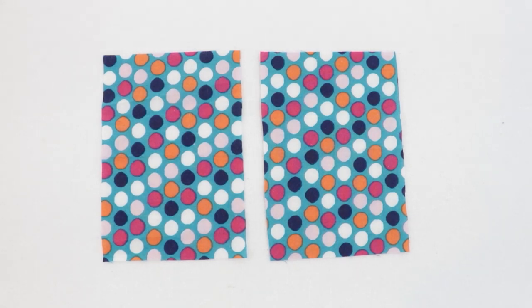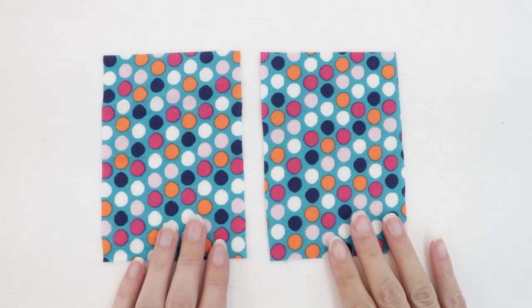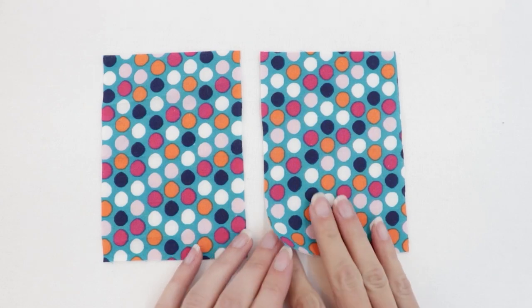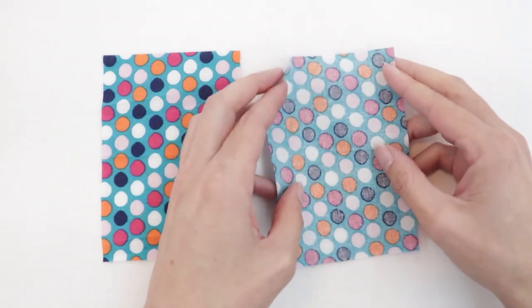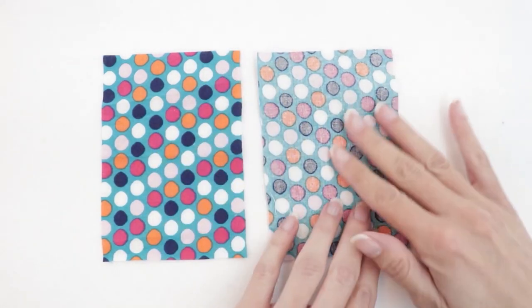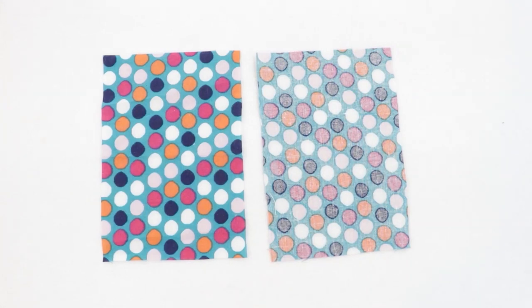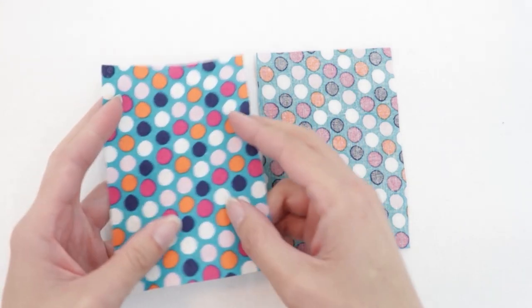To start making a French seam, take the two pieces of fabric you'd like to sew together and place them with wrong sides together. Remember that the wrong side of the fabric is usually a little bit more dull than the right side which is more vibrant.